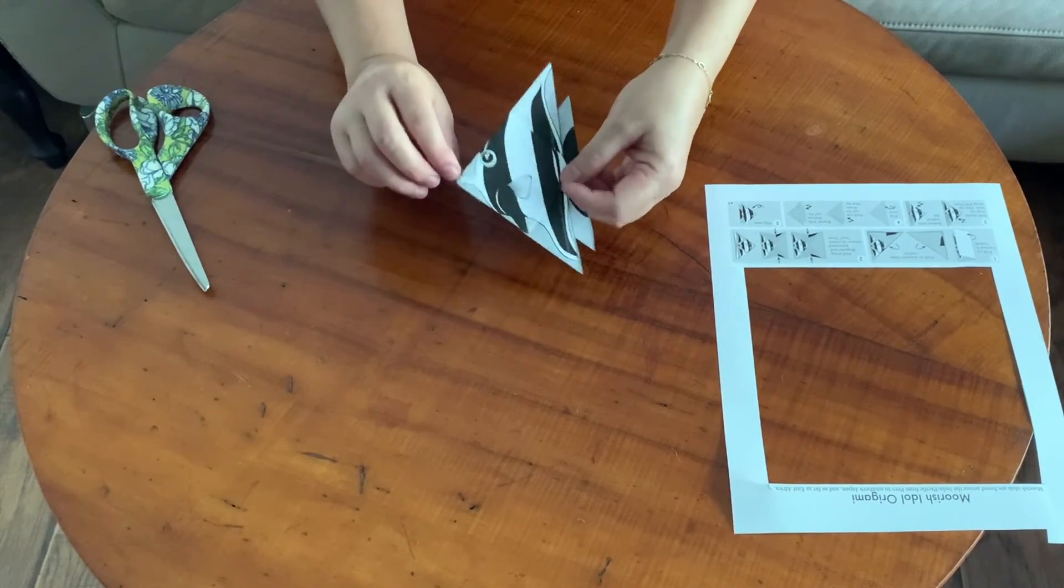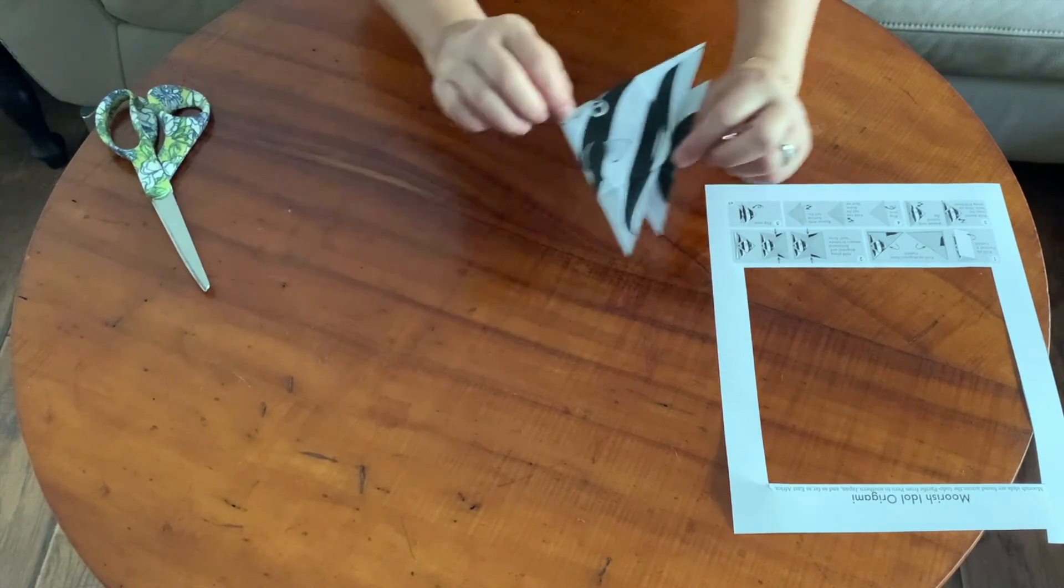Turn it over and you have your Moorish Idol origami.